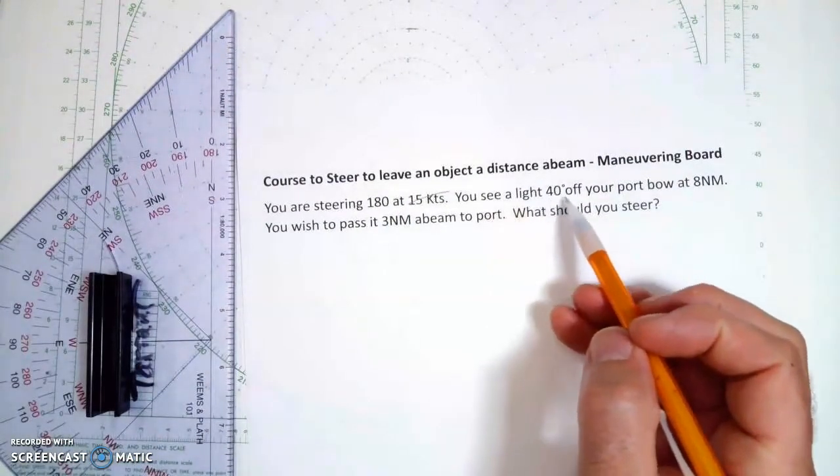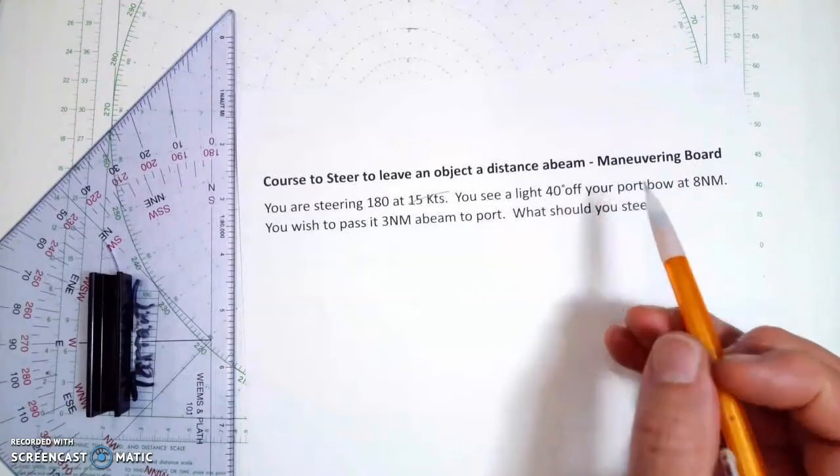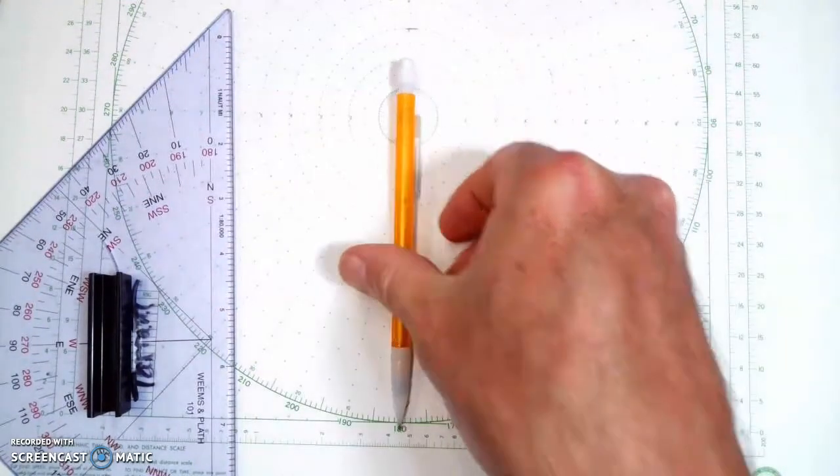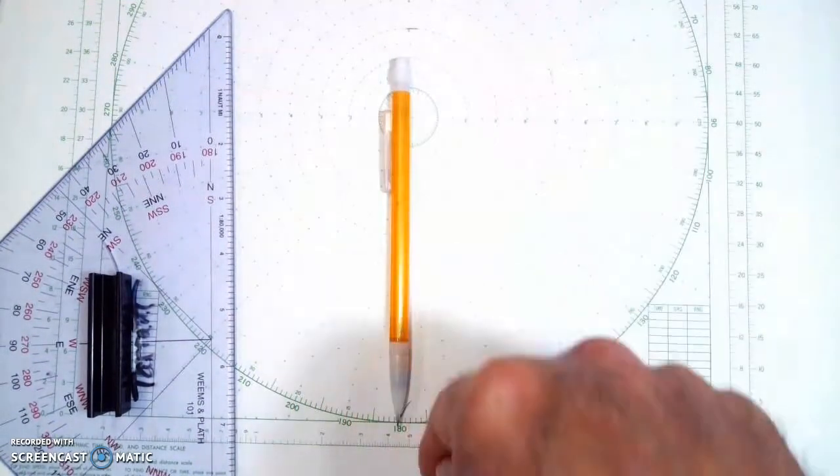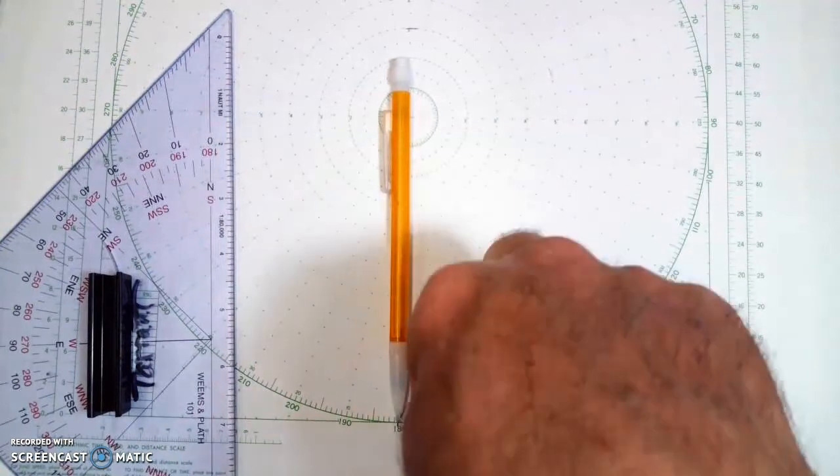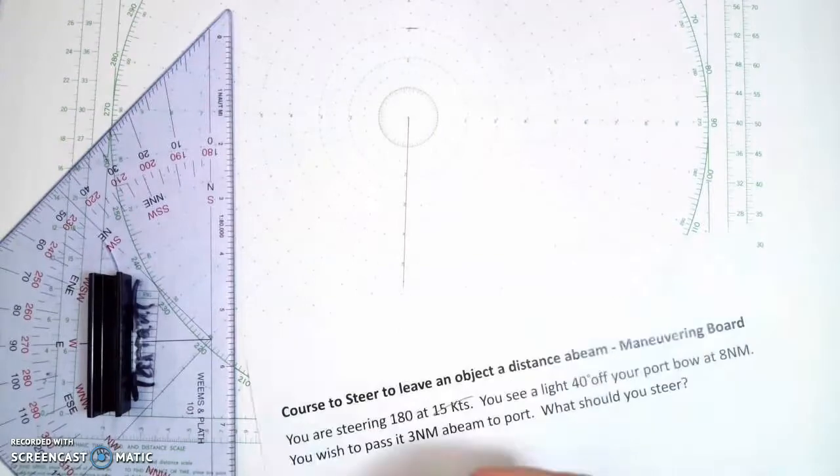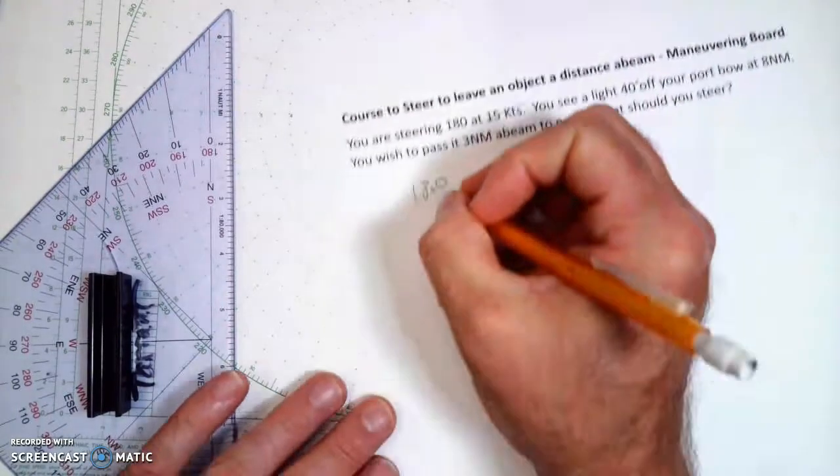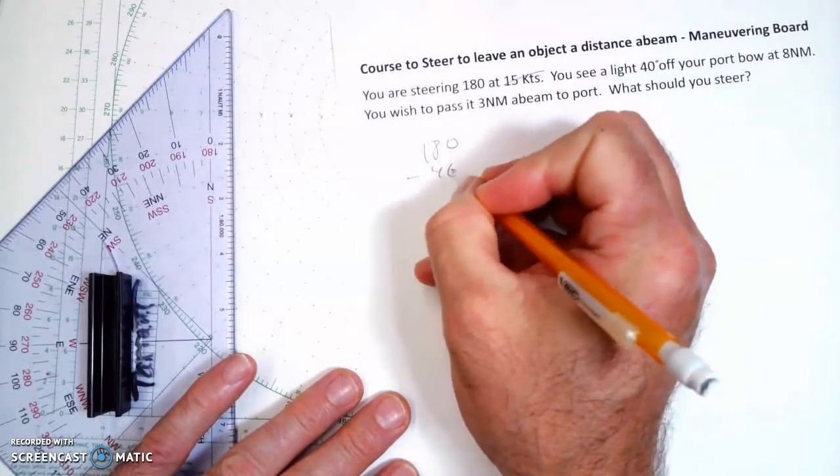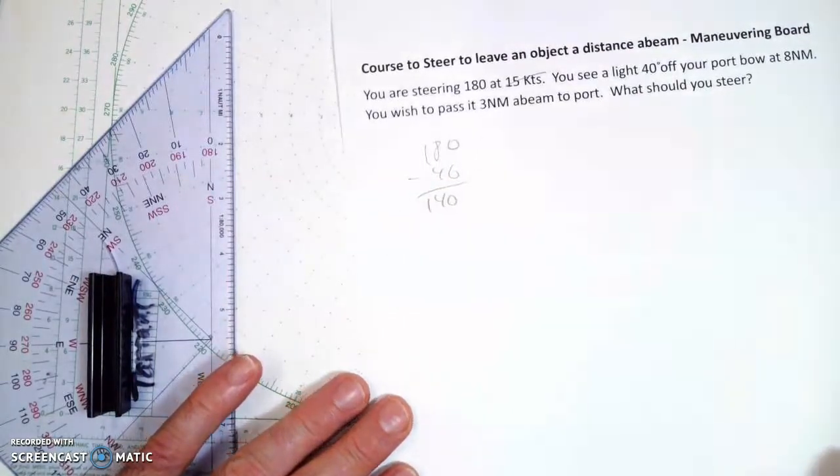Now, there is an object, a light, that's 40 degrees off of our port bow. Well, if we're going in this direction at 180, 40 degrees off our port bow is going to be over here: 10, 20, 30, 40. That's 140. I could go 180 minus 40. That means that the bearing is 140.